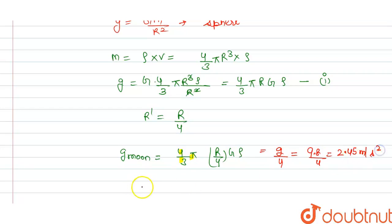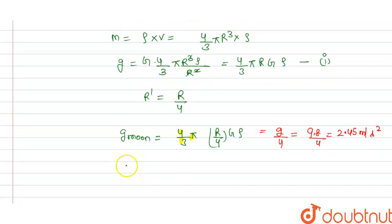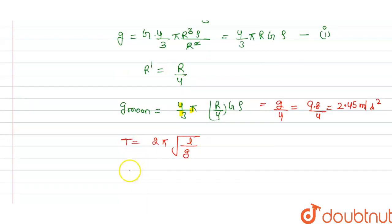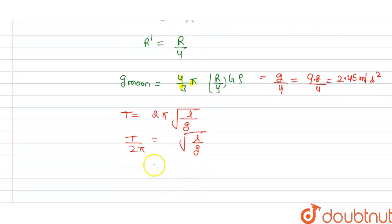We know that the time period of a pendulum is T equals 2π times the square root of l divided by g. Rearranging, T divided by 2π squared equals l divided by g, so squaring both sides gives l equals T squared divided by 4π squared, multiplied by g.